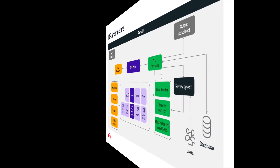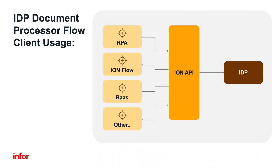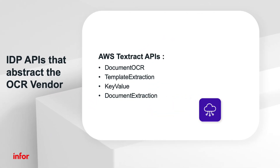resulting in a JSON output ready for further processing with RPA activities. Additionally, IDP offers smooth integration with a range of business processes and applications via APIs. IDP seamlessly integrates with AWS OCR APIs for enhanced data extraction.